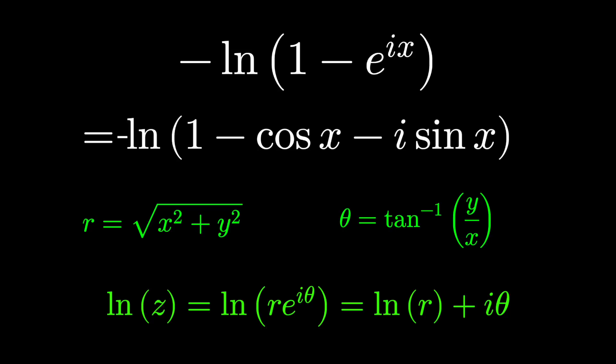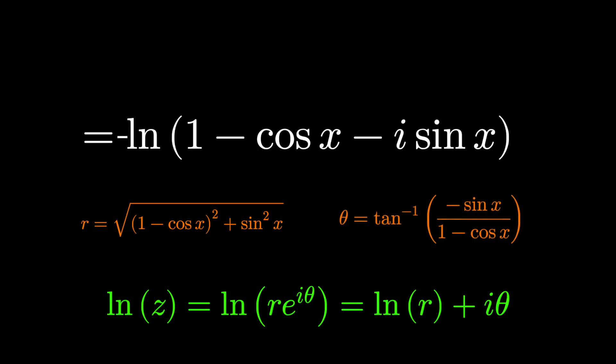so we can reduce the inside of this logarithm to 1 minus cosine x minus i sine x. The real part is 1 minus cosine x, the imaginary part is minus sine x. r is the square root of x squared plus y squared, here the square root of 1 minus cosine squared plus sine squared, theta is the inverse tangent of y over x, that's the inverse tangent of minus sine over 1 minus cosine x.